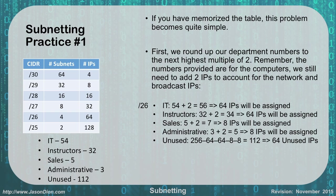64 IPs for IT becomes a /26. 64 IPs for the instructors becomes a /26. 8 IPs for sales and 8 for administrative both become a /29. And the unused portion at 64 becomes a /26 as well. And that's how you solve a problem like that.